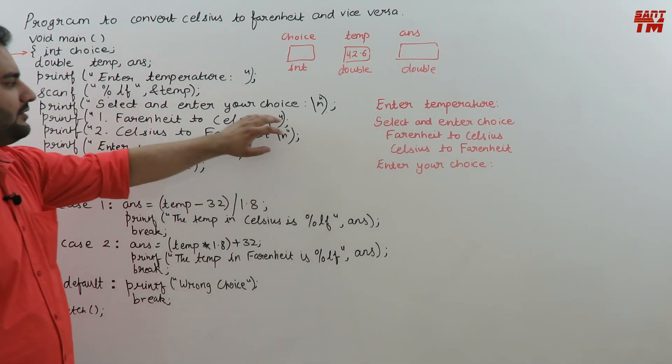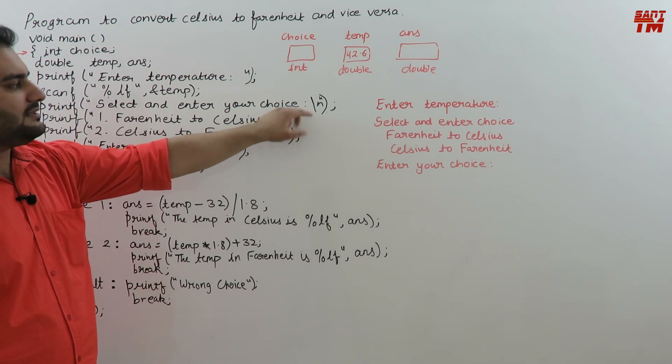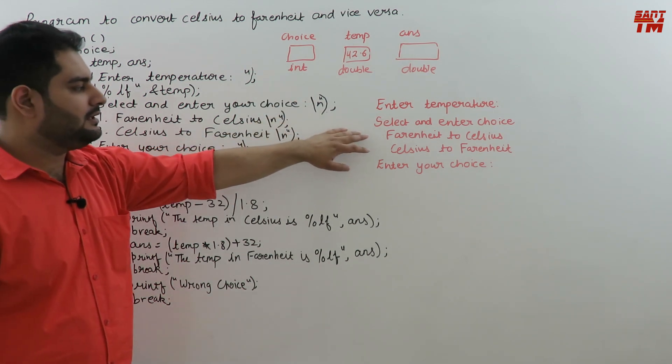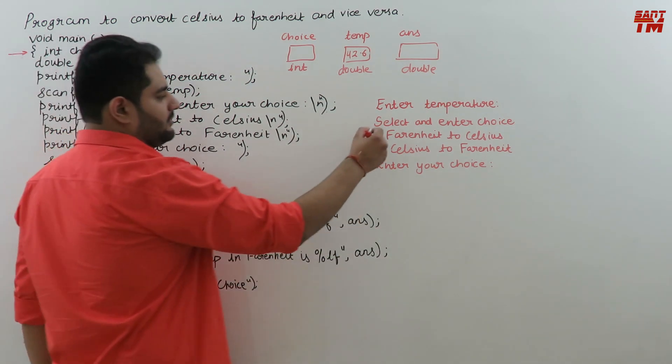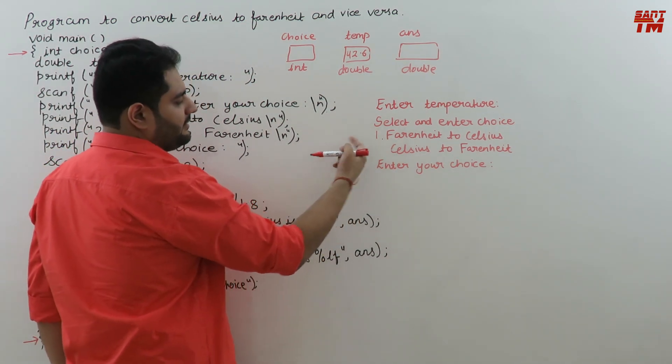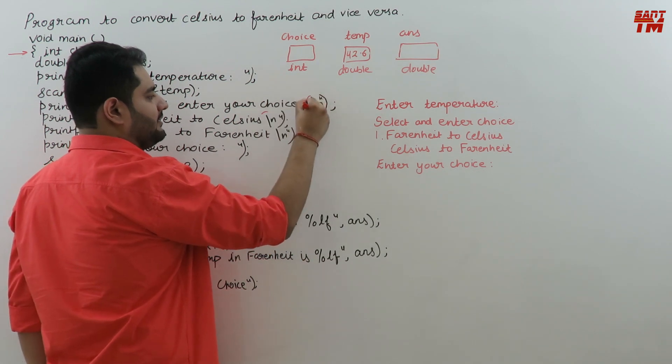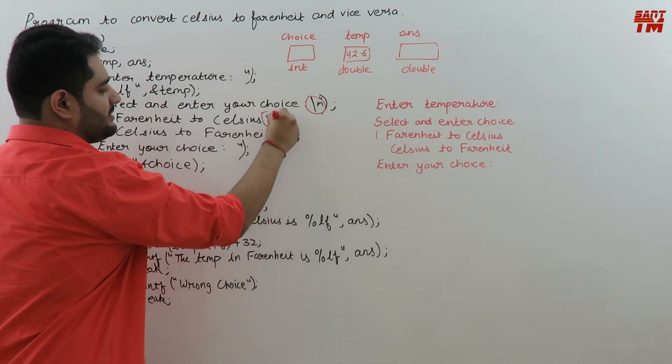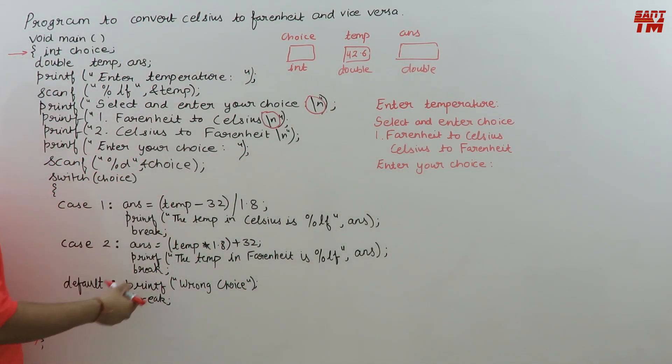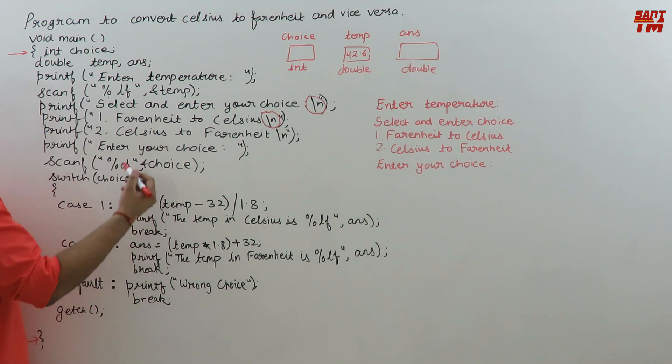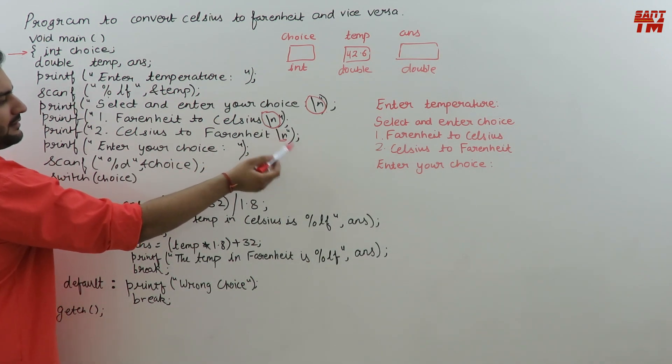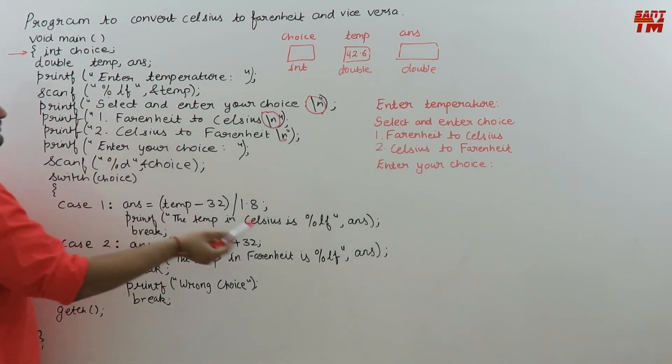This will be printed as is: select and enter your choice. Slash n means the next statement will be printed in the next line. Printf one dot Fahrenheit to Celsius, then slash n so the next statement is in the next line. Printf two dot Celsius to Fahrenheit is also in next line. Again slash n, so enter your choice is in the next line.